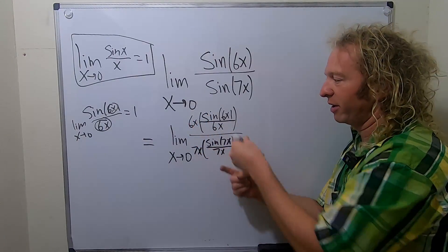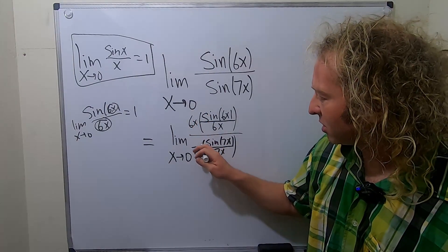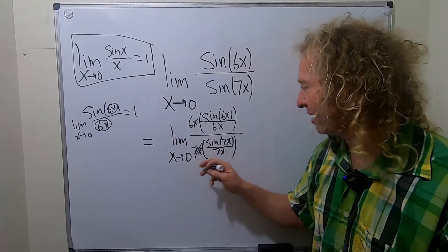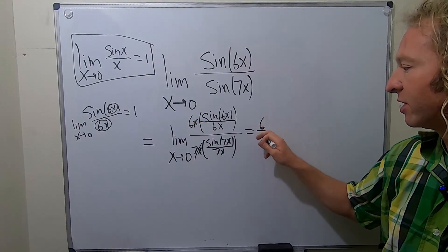So again, look, we didn't do anything. And now the x's will cancel. You can pull out the 6 sevenths. So this is 6 over 7.